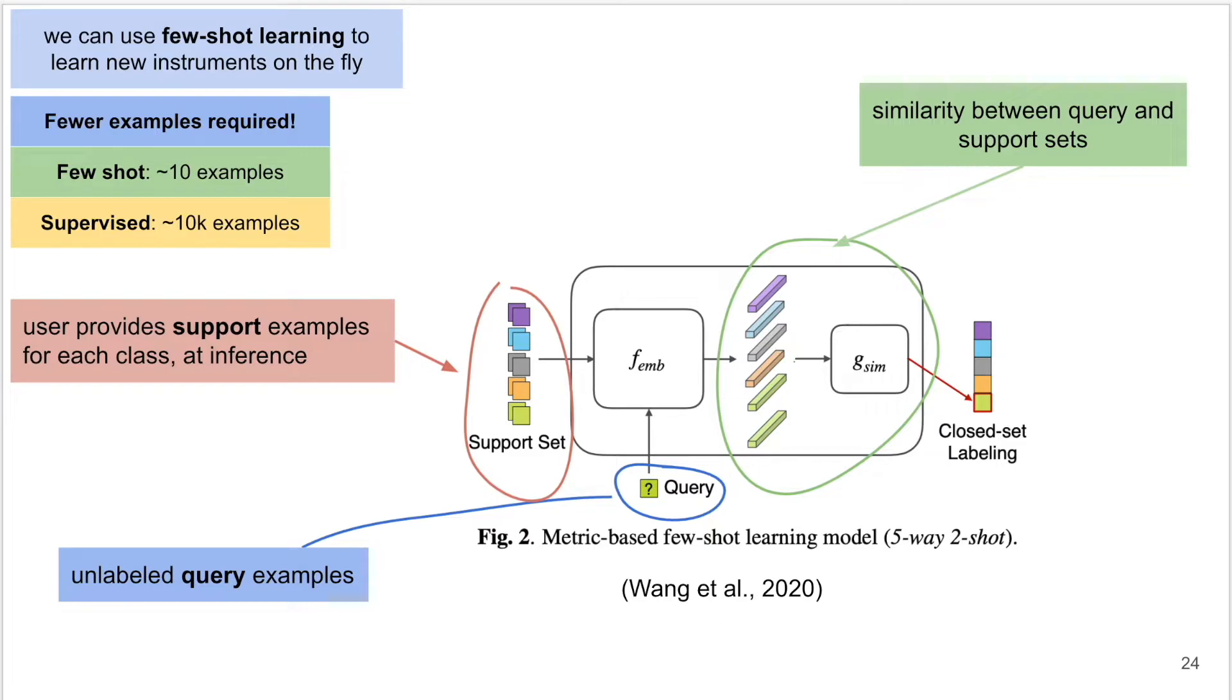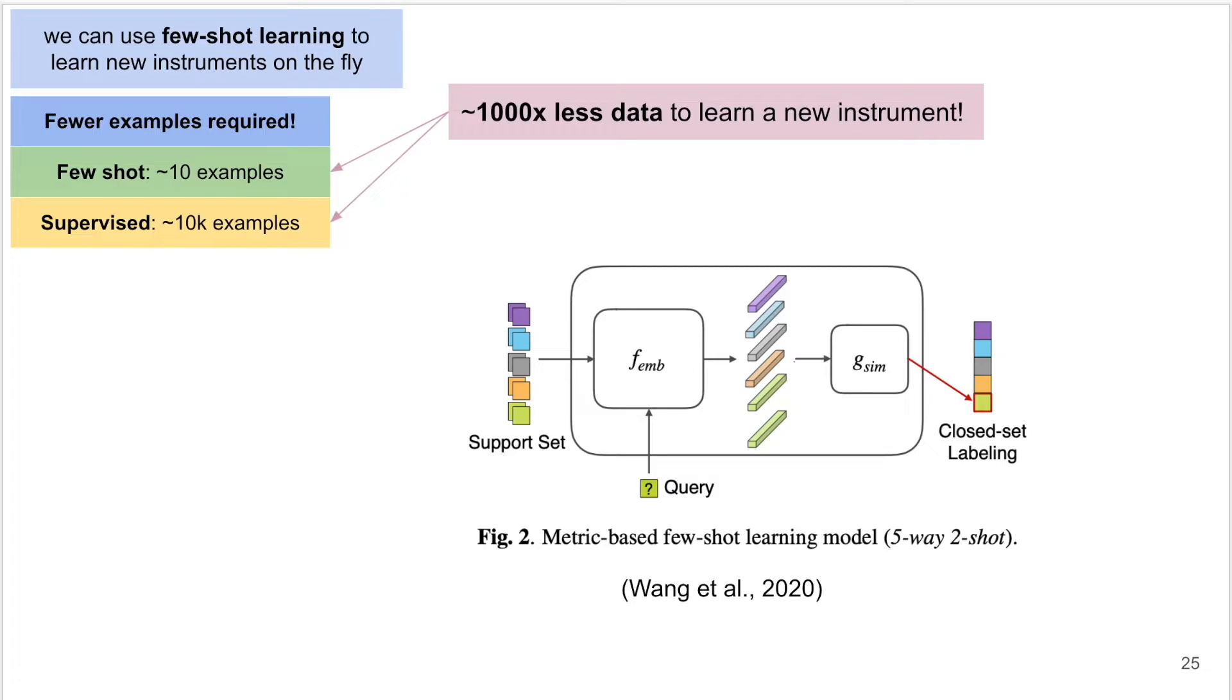This means that we can learn new, unseen classes using about a thousand times less data than with regular supervised learning.